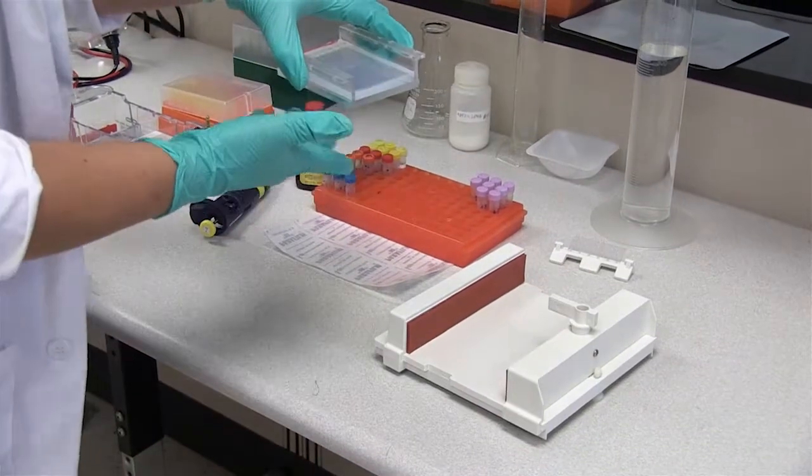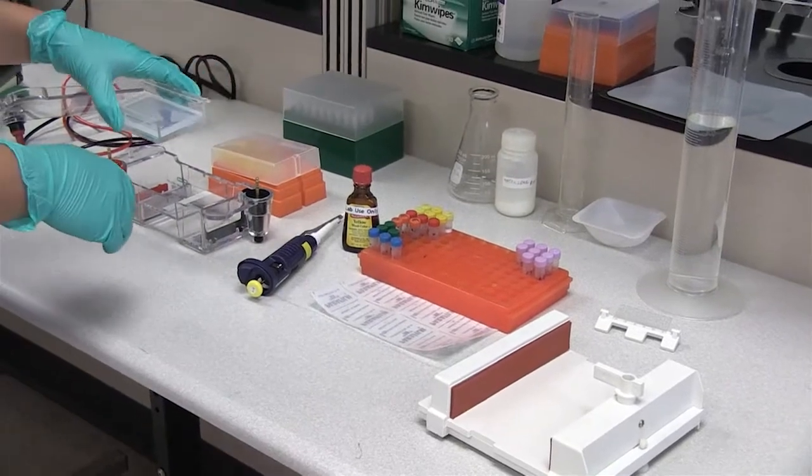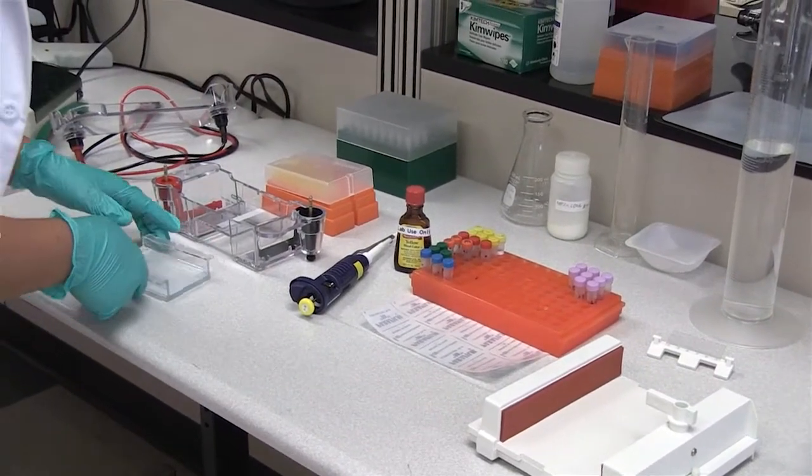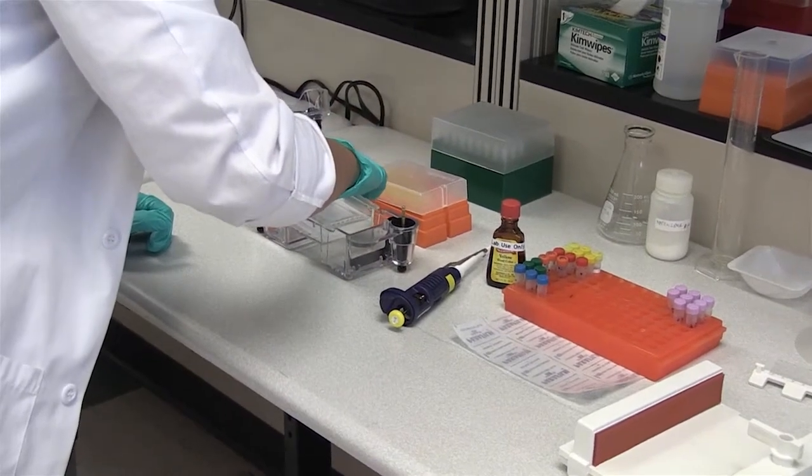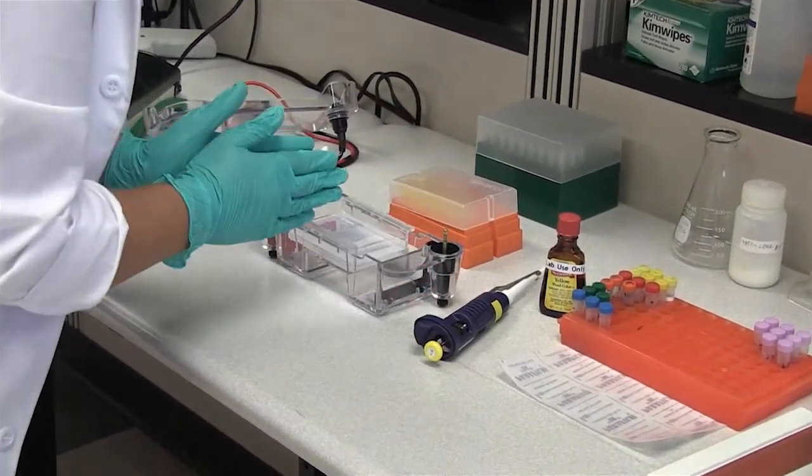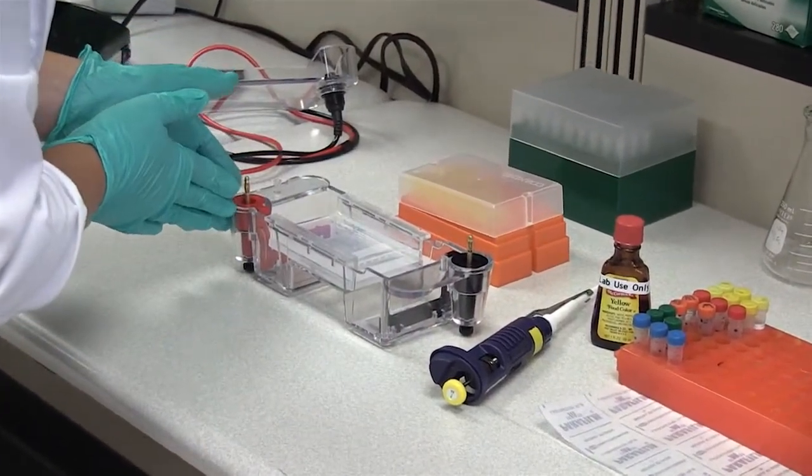So the ends are going to be exposed. It's going to allow you to take that charge. Next thing we need to do is put our tray in our box. And what you're going to do is put the sample side toward the black electrode and leave the open end toward the red electrode.